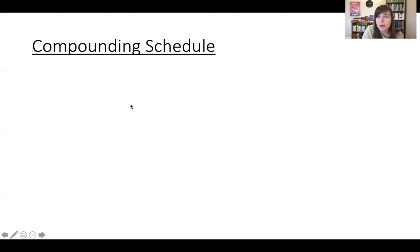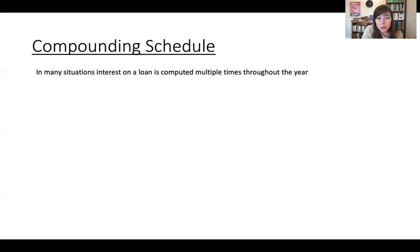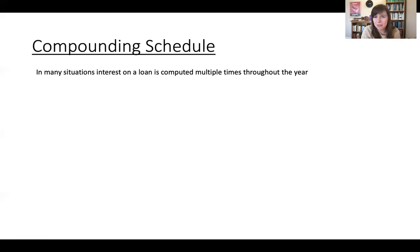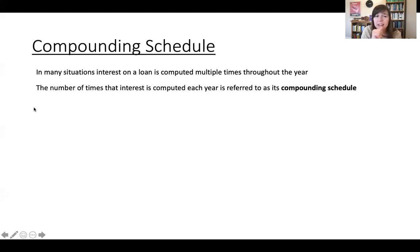Now let's talk about the compounding schedule, because this is really important when discussing compound interest. In many situations, interest on a loan is computed multiple times throughout the year. In the previous example we were assuming interest is calculated once per year, but it's often calculated monthly. The number of times that interest is computed each year is referred to as the compounding schedule. In the previous example, the compounding schedule was once per year.